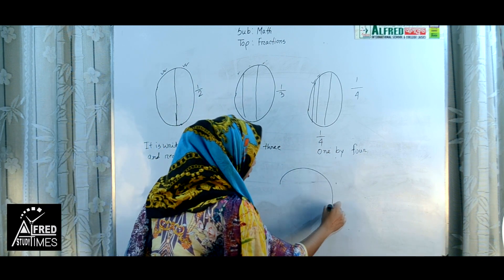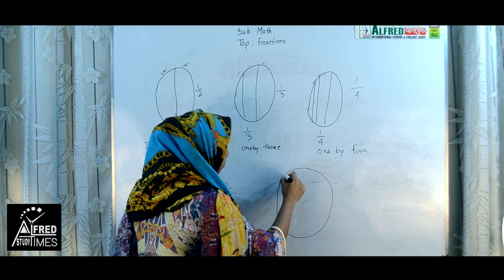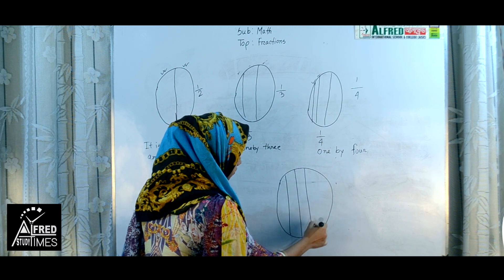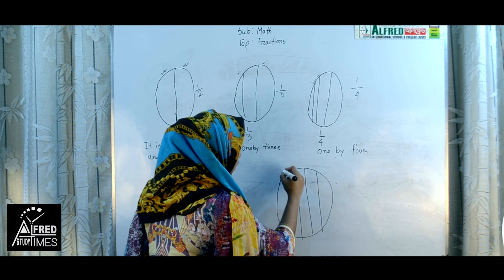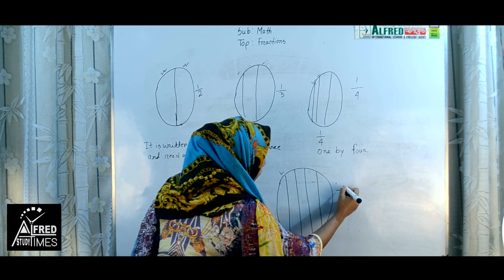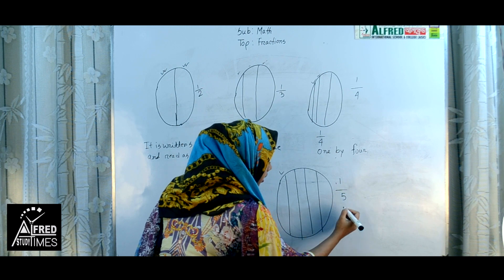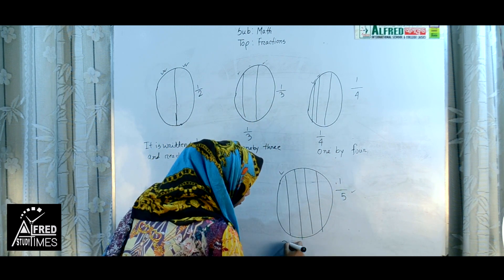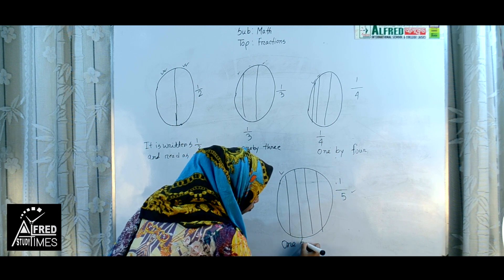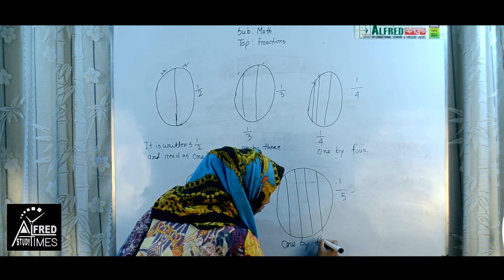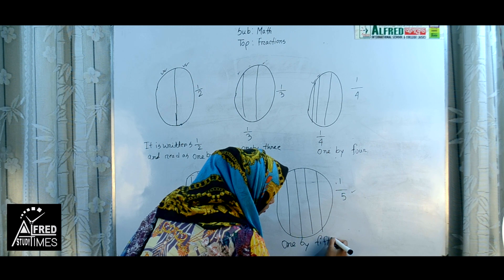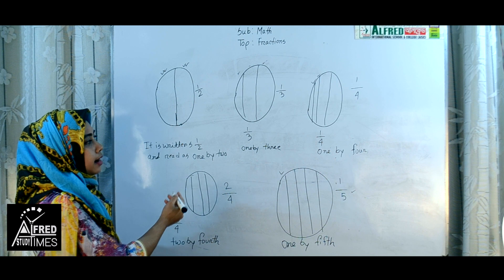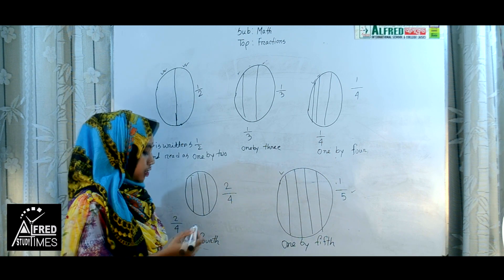If we divide one thing into 5 equal parts, each part we call one fifth. It is written as 1 by 5 and read as 1 by 5. So this is fraction — when we divide a whole number, we can get a fraction.